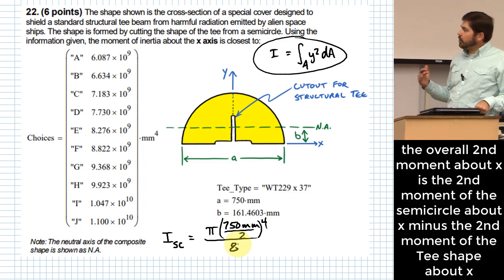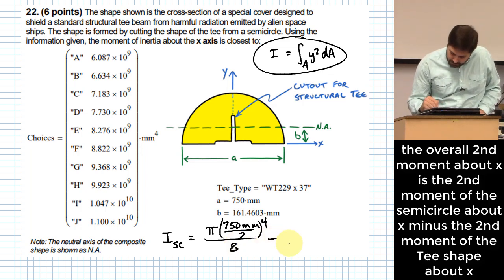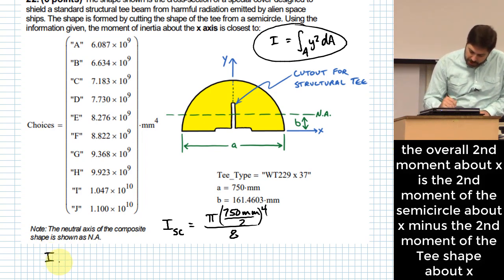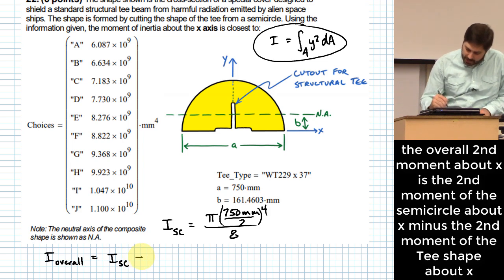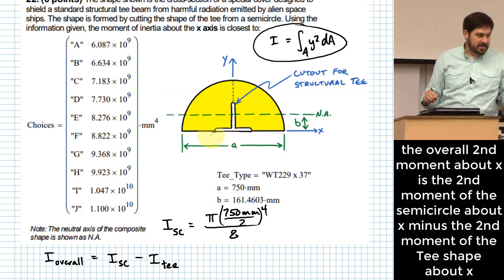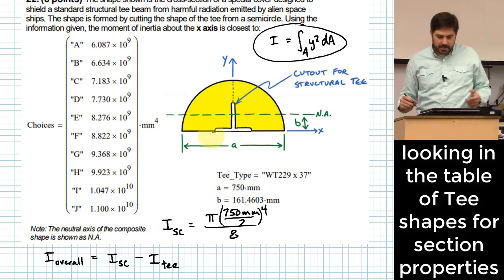But what makes it a little bit harder is now I have to subtract off. In order for me to figure out the i of our actual shape around the x axis, I need to take that i for just the semicircle and subtract the i for the t. But I need to take the i for that t around this edge, because that's the edge that aligns with that x axis. Well, let's go into the table for the t, it says it's a WT229 by 37.